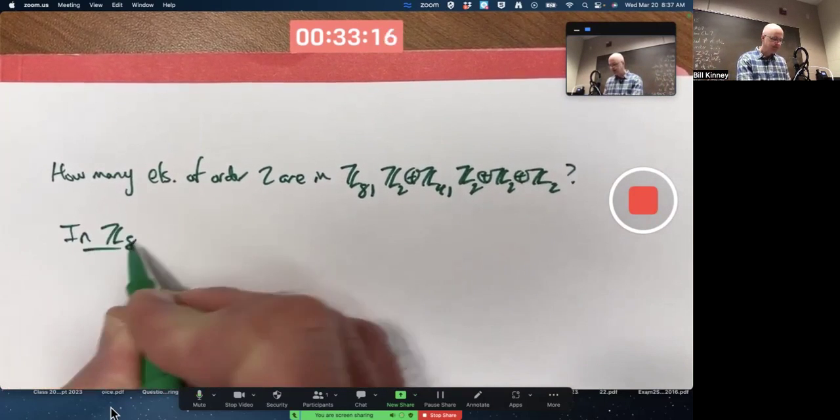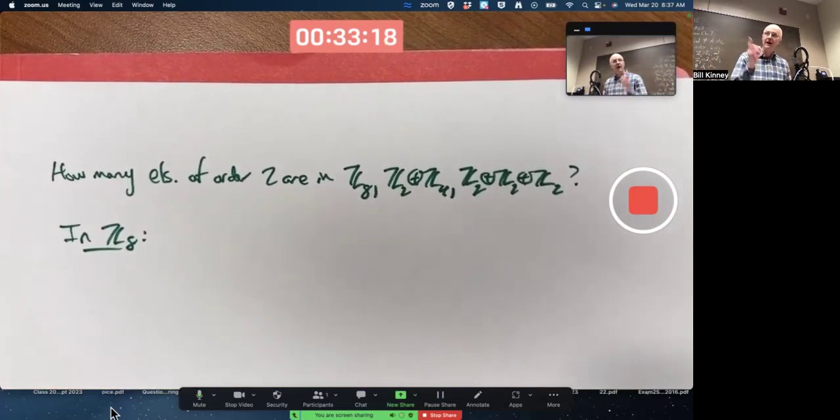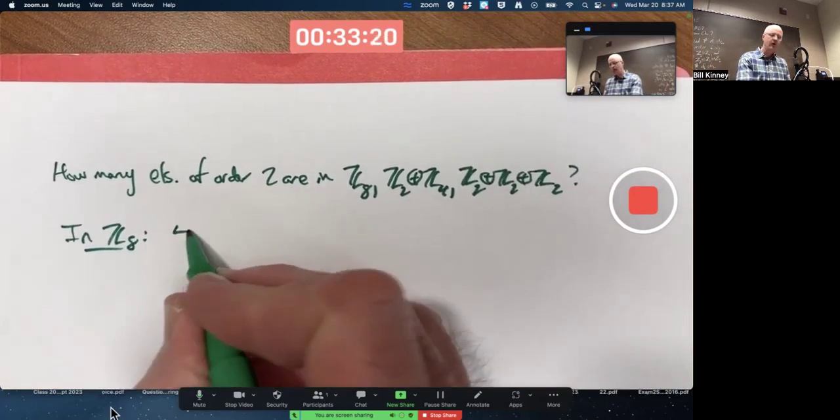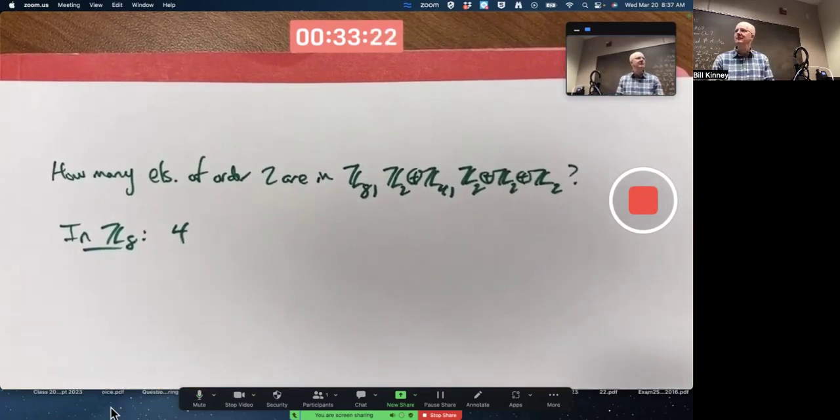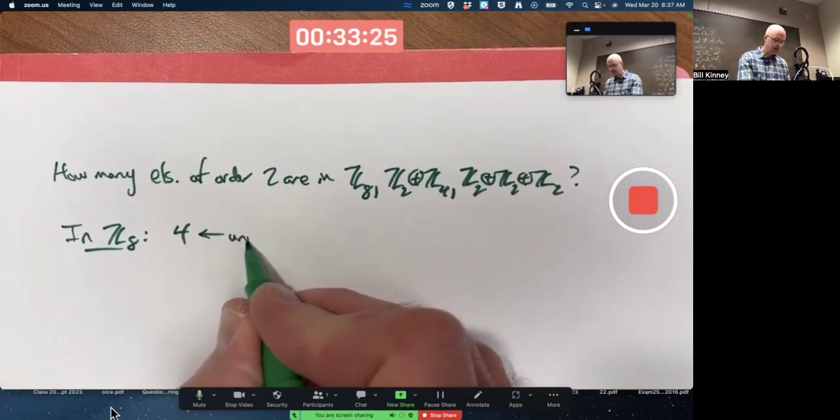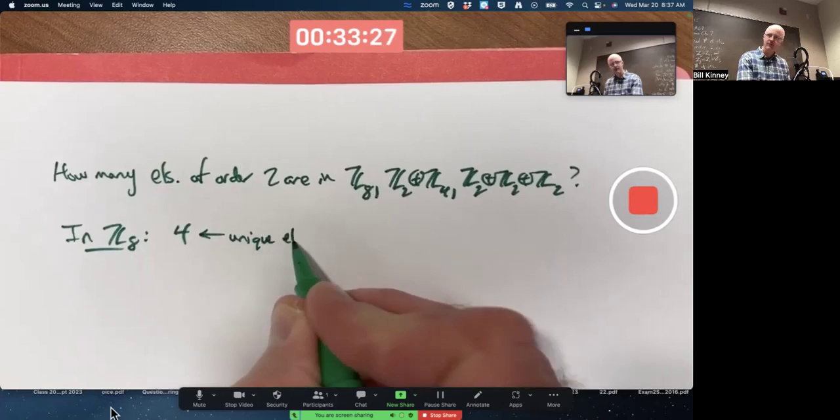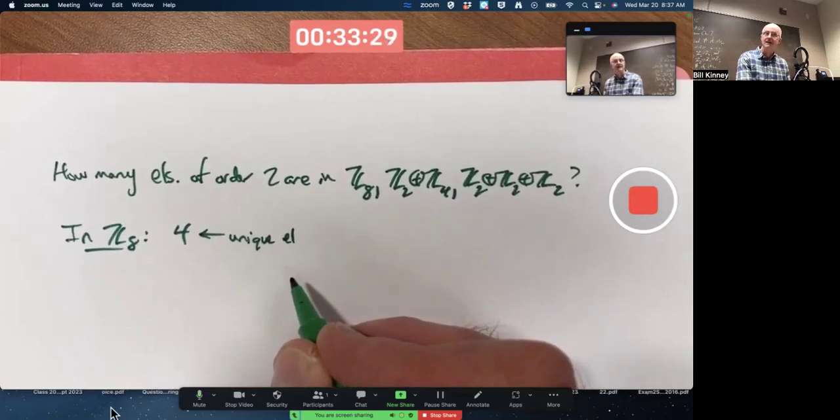In Z8, there's only one element of order two, four. Four is the unique element of order two, right? Four plus four is zero mod eight. That's the only element of order two.